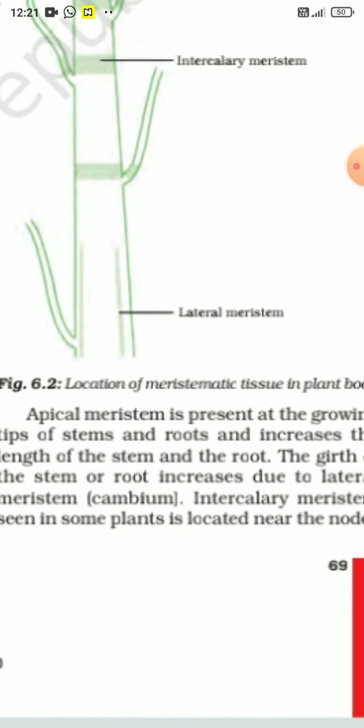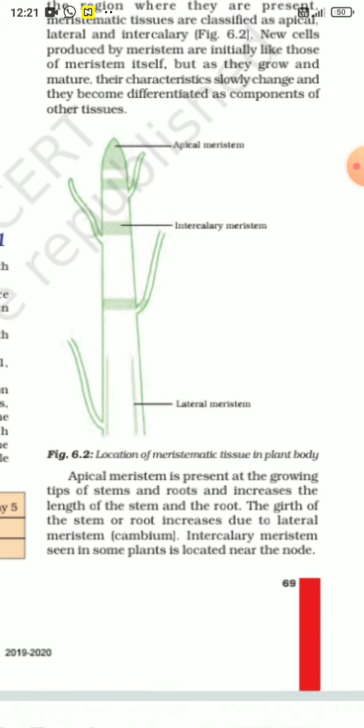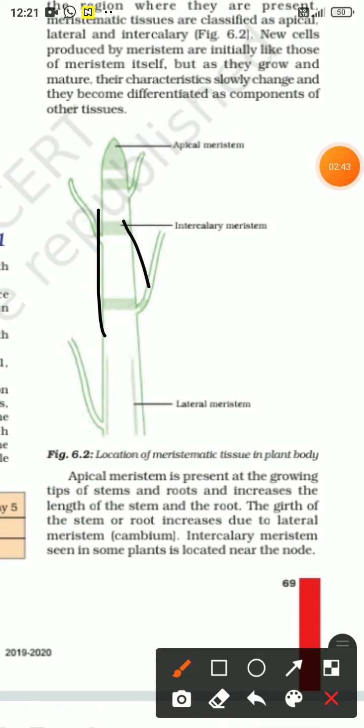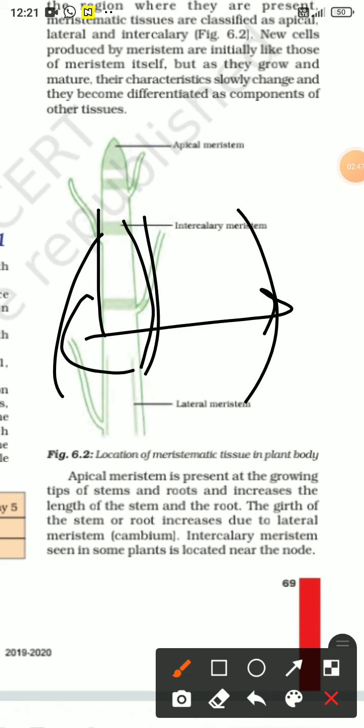The girth of the stem and roots increase due to the lateral Meristem Cambium. This girth grows because of lateral Meristem. Intercalary Meristem in some plants is located near the nodes where the nodes arise. Look at this, Intercalary Meristem found.